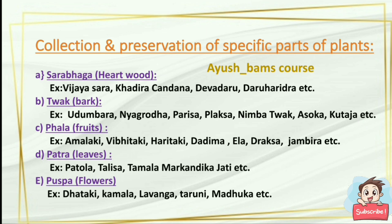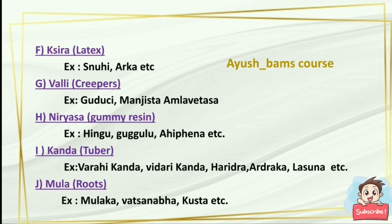Collection and preservation of specific parts of plants: Sara bhaga means heartwood — examples are Vijayasara, Devadaru, Daru Haridra, etc. Twak means bark — examples are Udumbara, Nyagrodha, Parisha, etc. Phala means fruit — examples are Amalaki, Vibhitaki, Haritaki, etc. Patra means leaves — examples are Patola, Palisha, etc. Pushpa means flower — examples are Dhataki, Kamala, Lavanga, etc. Kshira means latex — examples are Snuhi, Arka, etc. Valli means creepers — examples are Guduchi, Manjistha, Amlavetasa, etc. Niryasa means gum resin — examples are Hingu, Guggulu, etc. Kanda means tuber — examples are Parahi Kanda, Vidari Kanda, etc. Moola means roots — examples are Mulaka, Vatsanabha, etc.